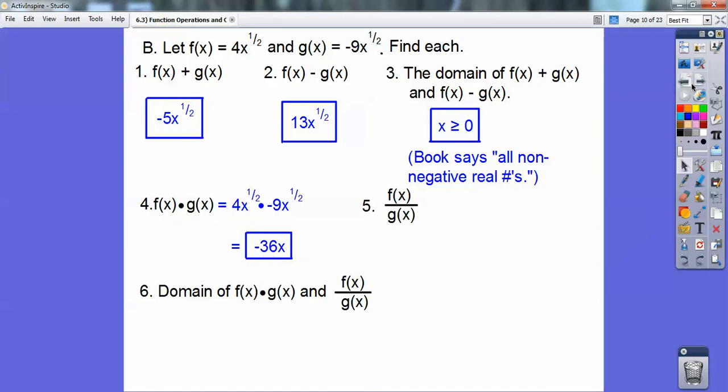Here I'm going to go ahead and put 4x to the 1 half over negative 9x to the 1 half. Notice that x to the 1 halves will cancel. So it becomes negative 4 ninths. So the domain of f of x times g of x is x is greater than or equal to 0.